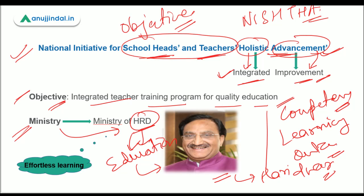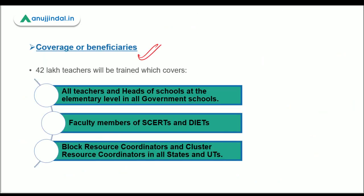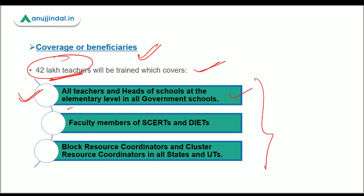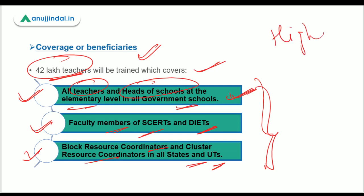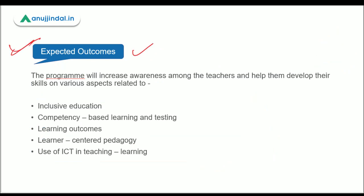The objective and ministry are now clear. Moving on to beneficiaries — 42 lakh teachers will be provided training under this scheme. The beneficiaries include: all teachers and heads of schools at the elementary level in all government schools; faculty members of SCERTs and DIETs; and block resource coordinators and cluster resource coordinators in all states and UTs. Everyone is included except those in higher education — this scheme is not for higher education teachers.